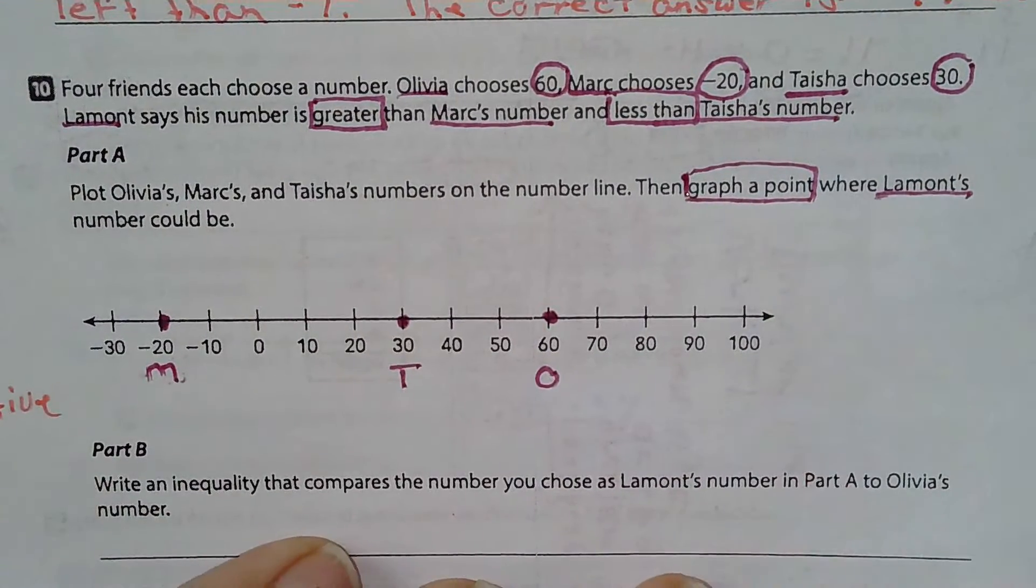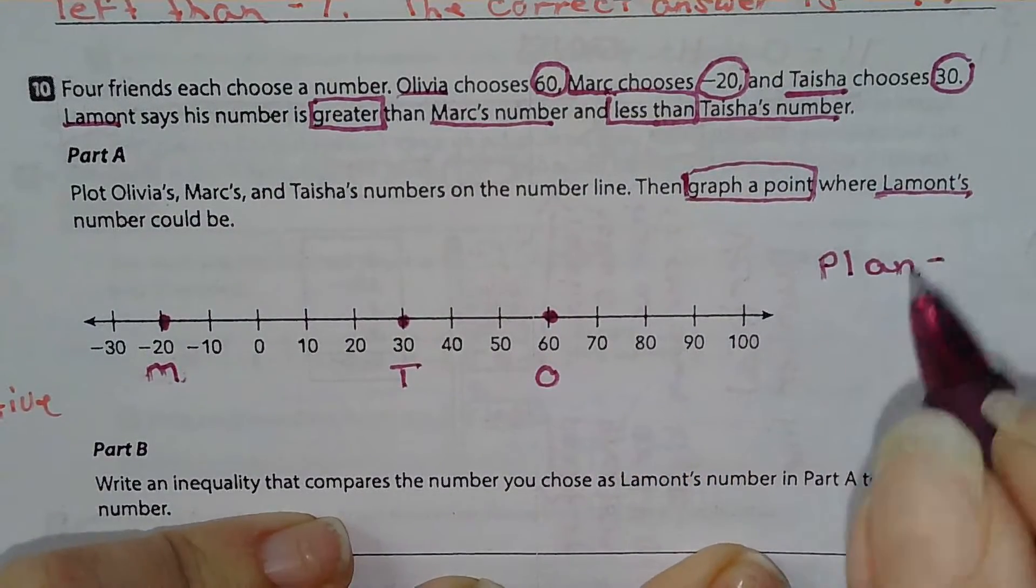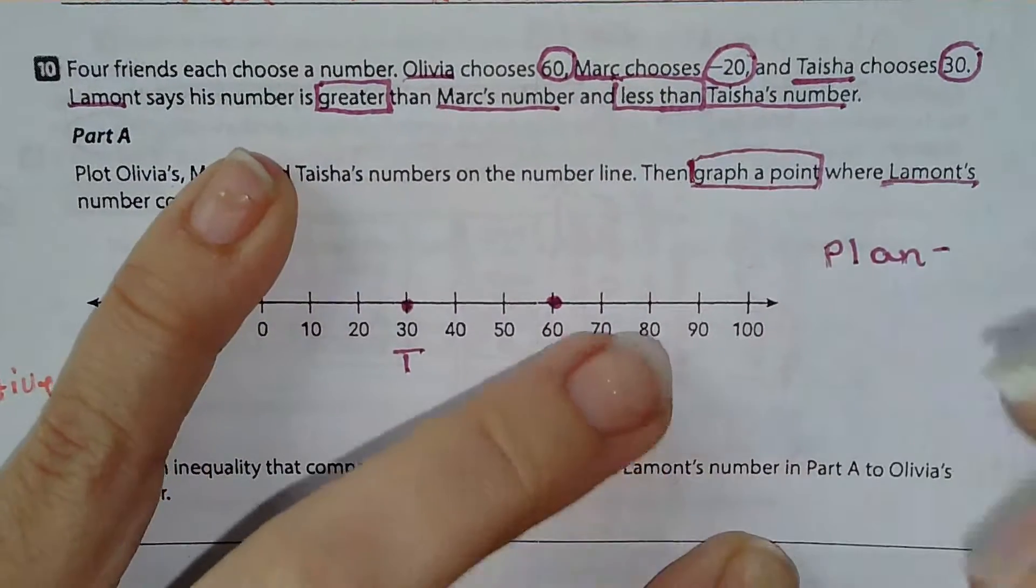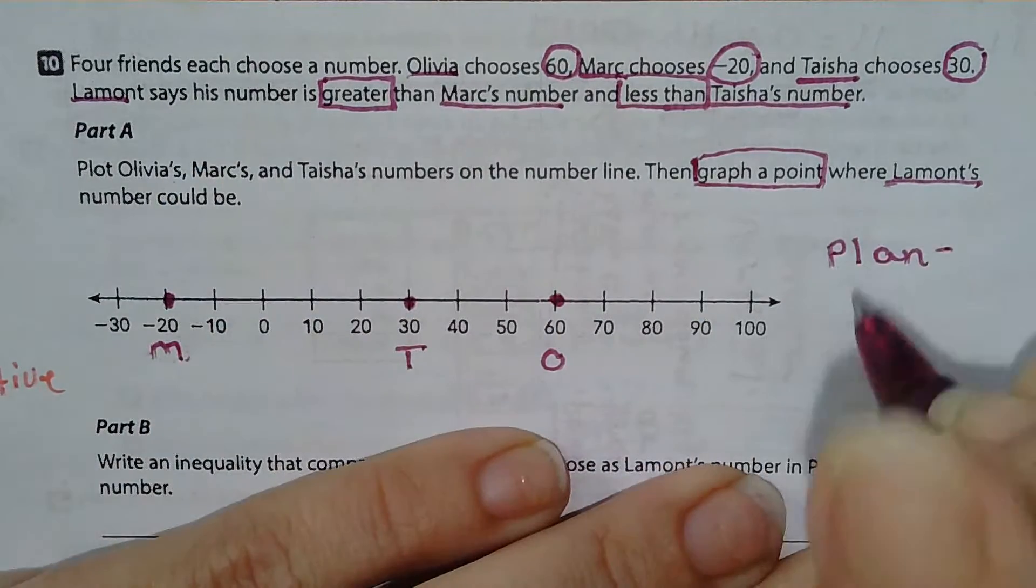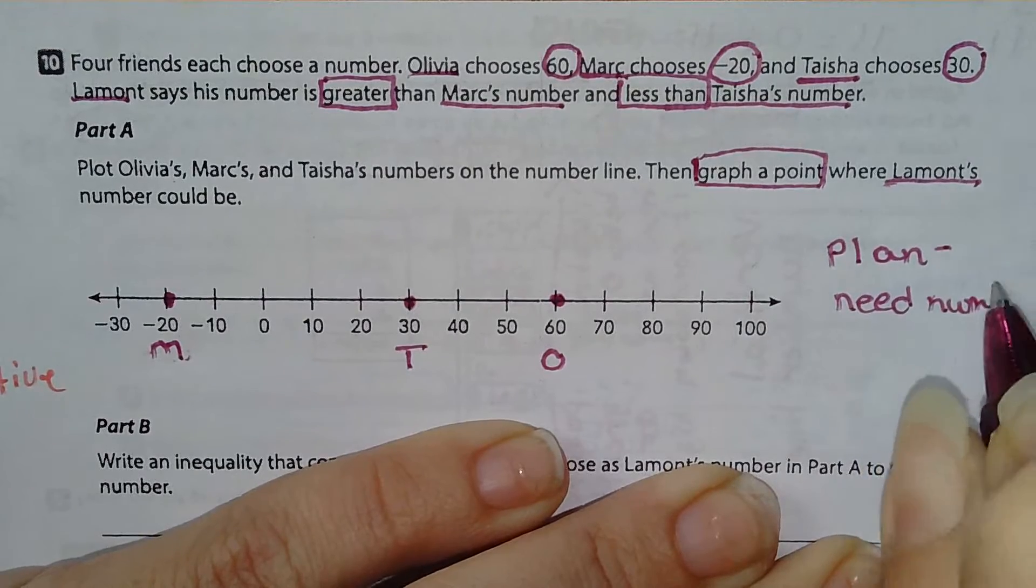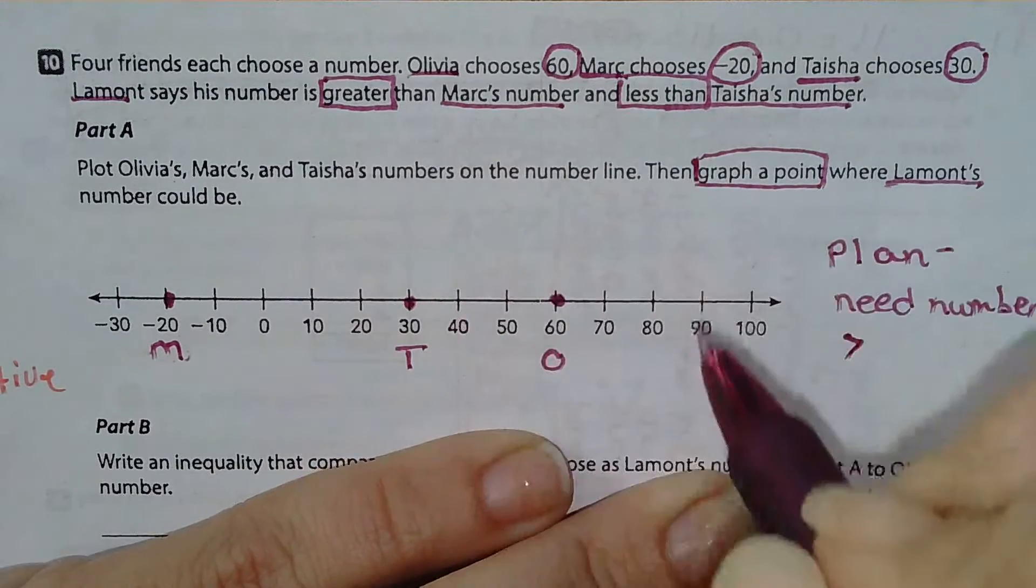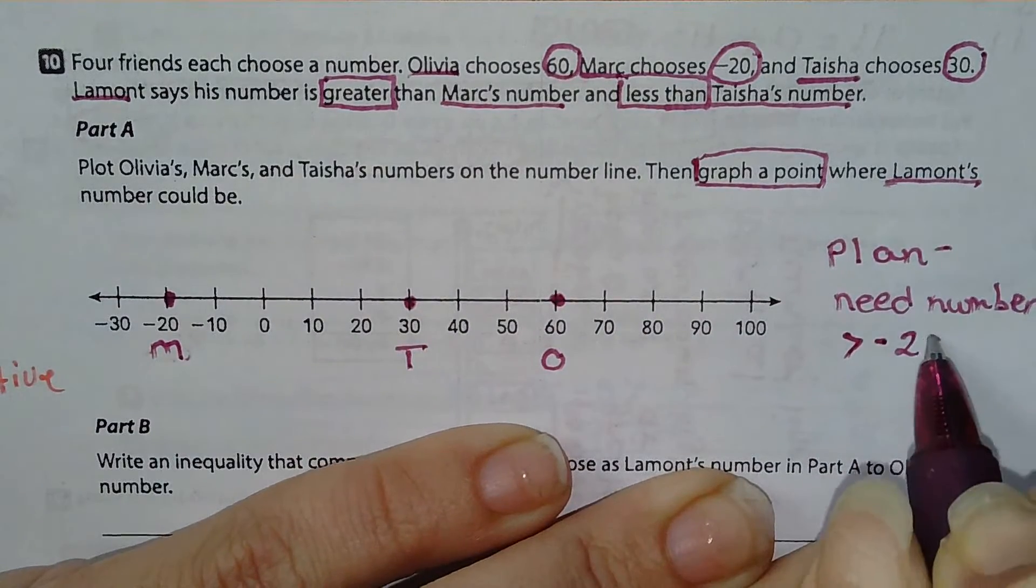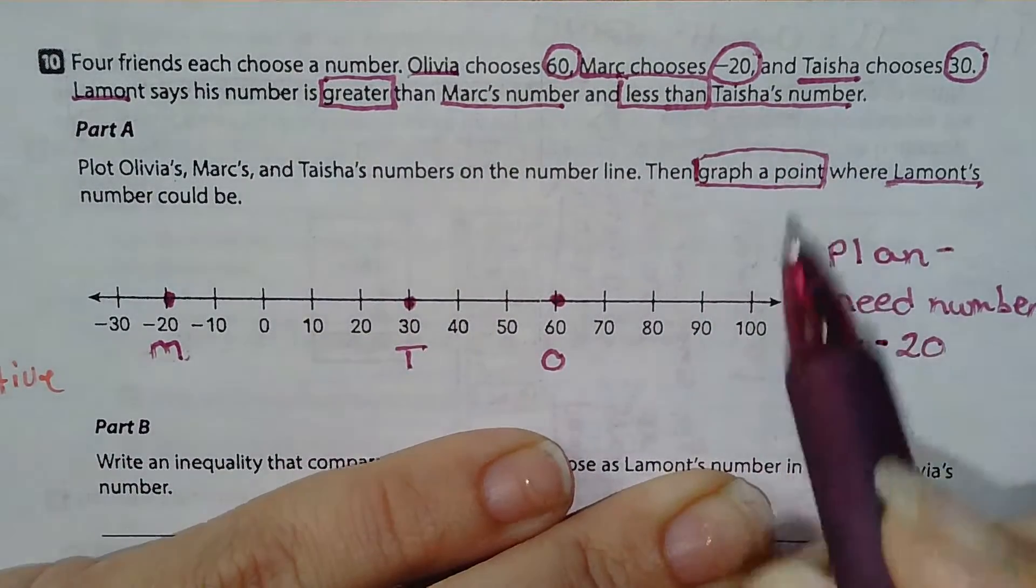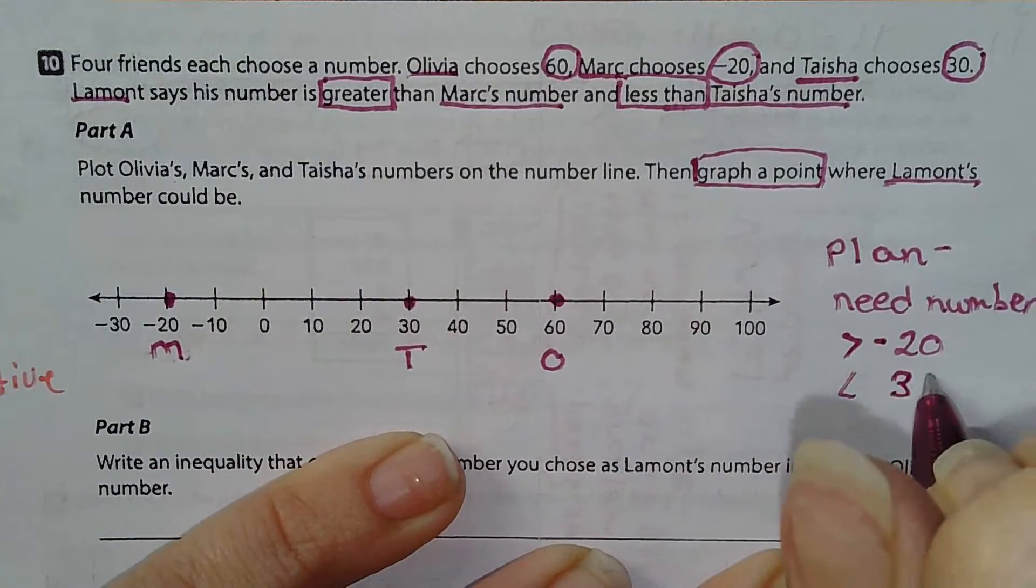Now my plan is I need to remember that Lamont's number—I need to find a number that is greater than negative 20, because that's Mark's number, but less than Tasha's number, and hers is 30. That's the number I'm looking for.